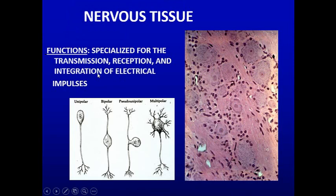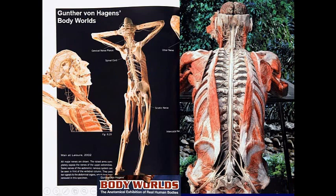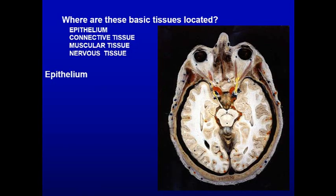That brings us to nervous tissue. There are different types of nerve cells. We see a nerve cell body here with a nucleus and a nucleolus and Nissl substance in this ganglion cell. They have electrical pulses that transmit signals for the contraction of muscle to the feeling of pain and different functions.